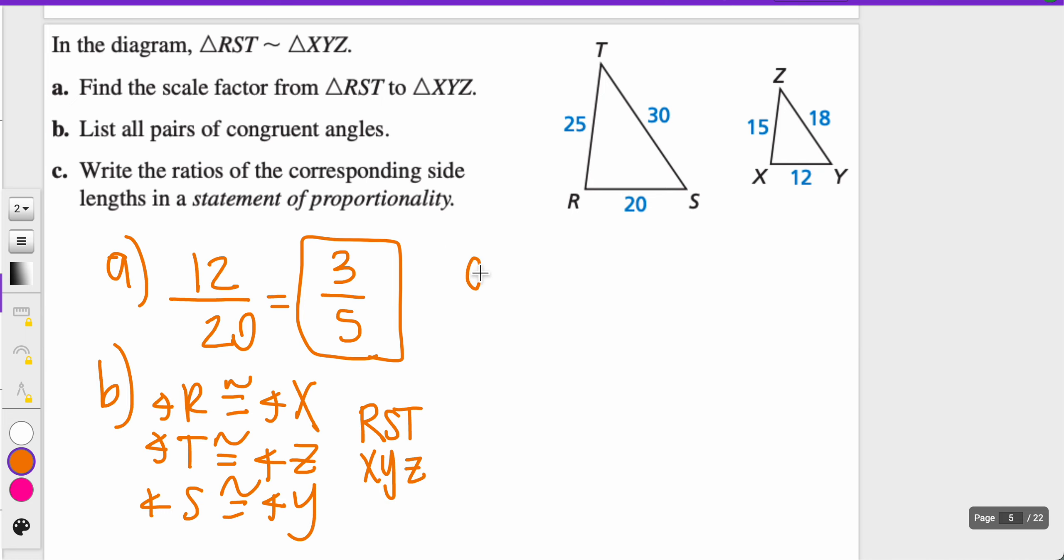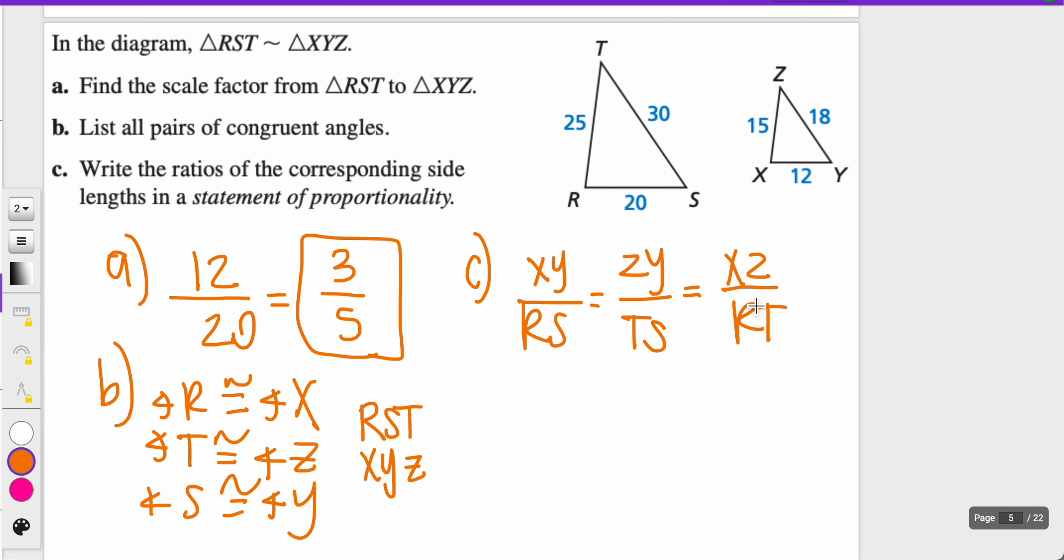The last one says write the ratios of the corresponding side lengths in a statement of proportionality. We're going to write them as proportional beings. We can start with XY side corresponds to RS, which will be proportional to ZY and TS, and that will be proportional to XZ over RT. That would be your statement of proportionality.